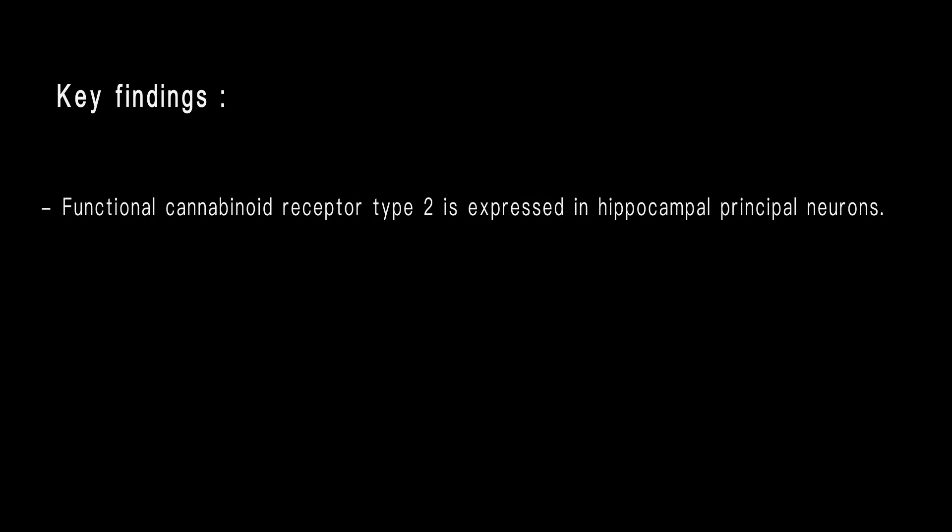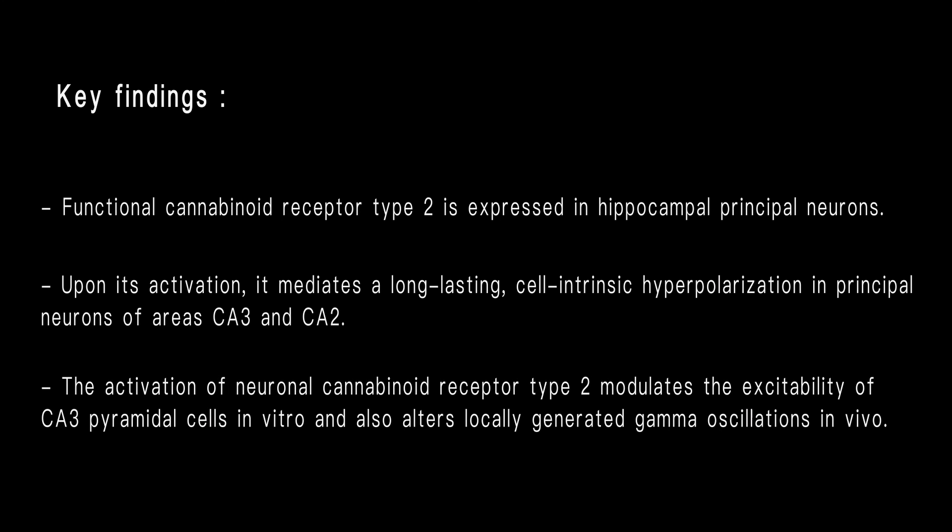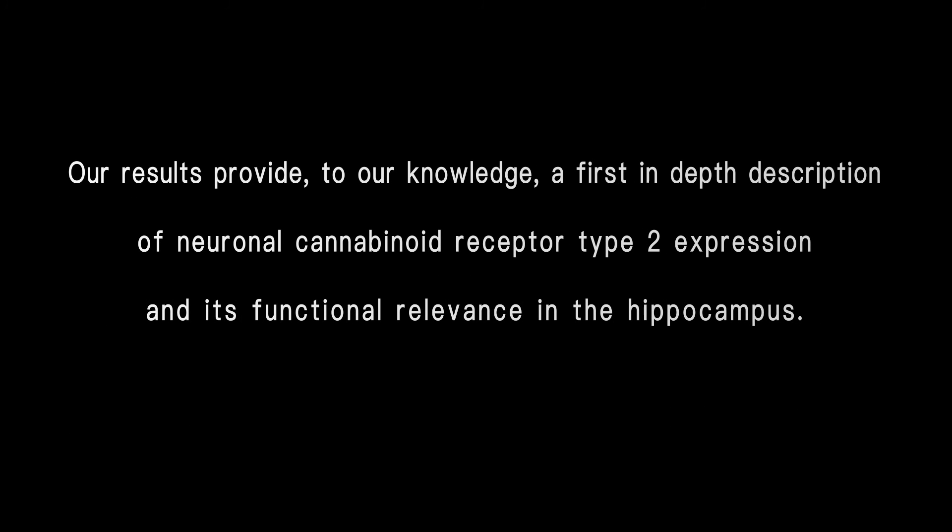Functional cannabinoid receptor type 2 is expressed in hippocampal principal neurons. Upon its activation, it mediates a long-lasting cell-intrinsic hyperpolarization in principal neurons of areas CA3 and CA2. The activation of neuronal cannabinoid receptor type 2 modulates the excitability of CA3 pyramidal cells in vitro and also alters locally generated gamma oscillations in vivo. Our results provide, to our knowledge, a first in-depth description of neuronal cannabinoid receptor type 2 expression and its functional relevance in the hippocampus.